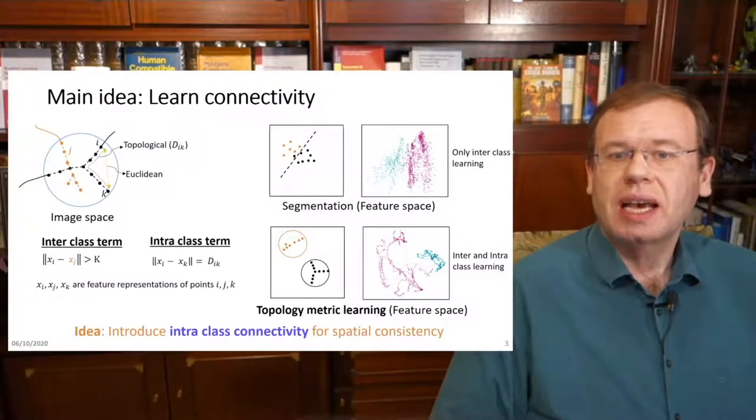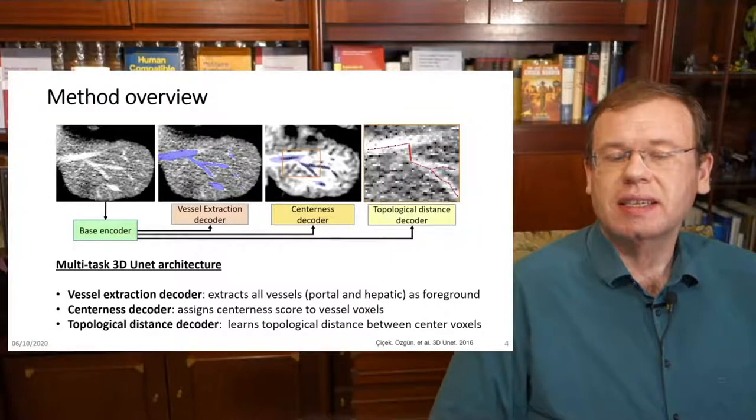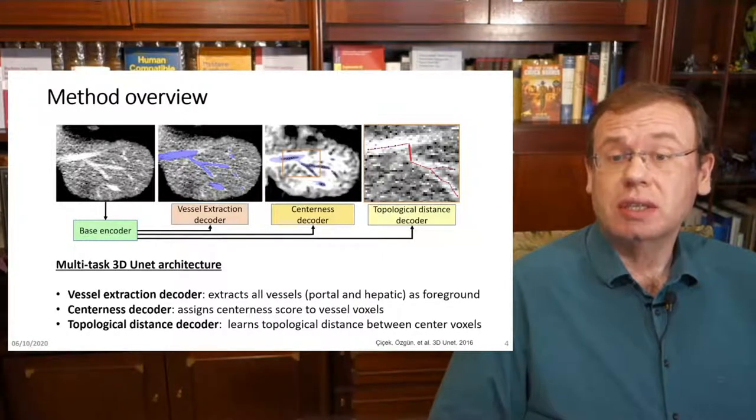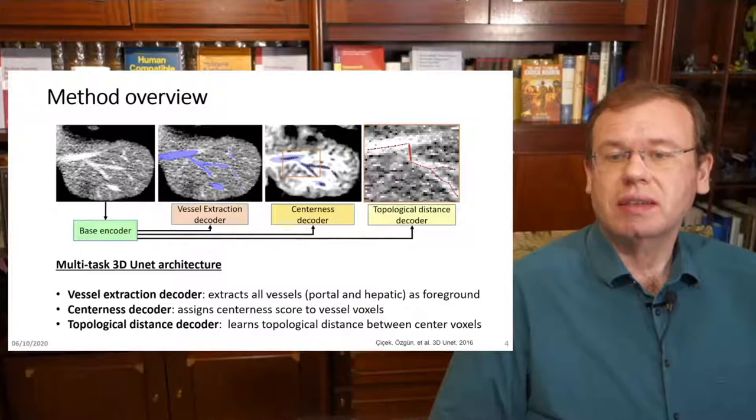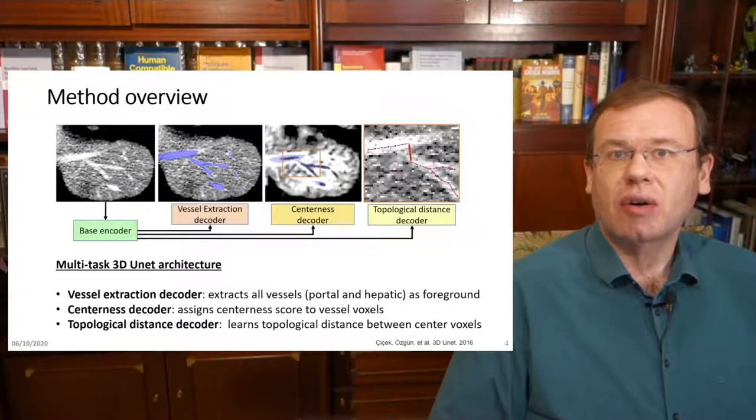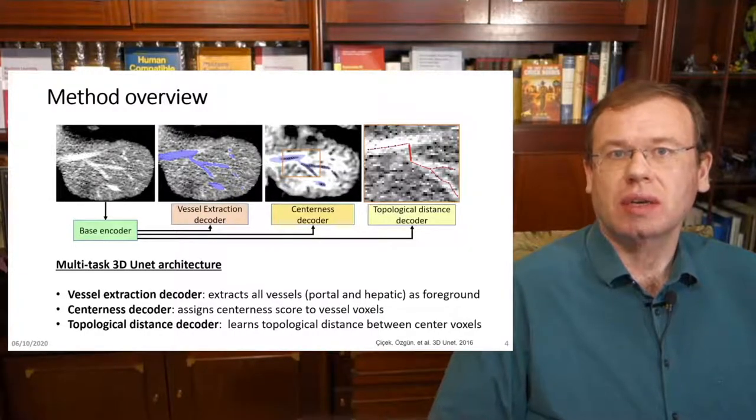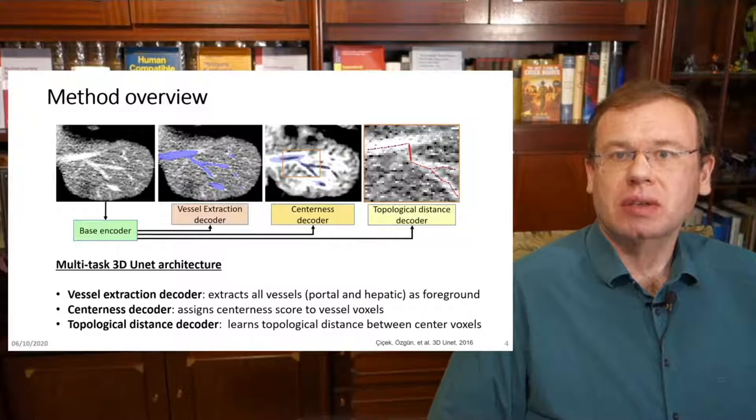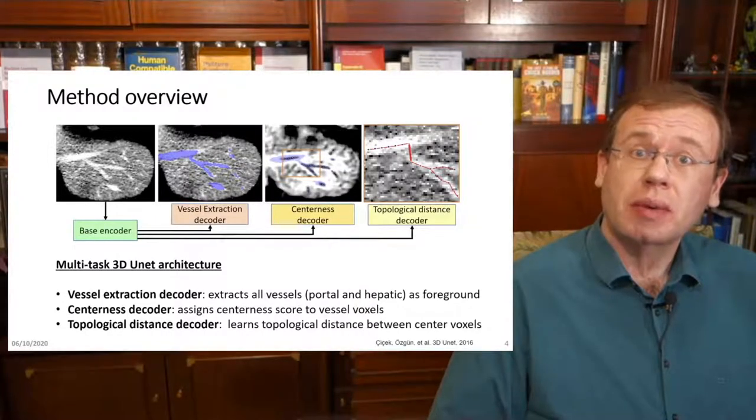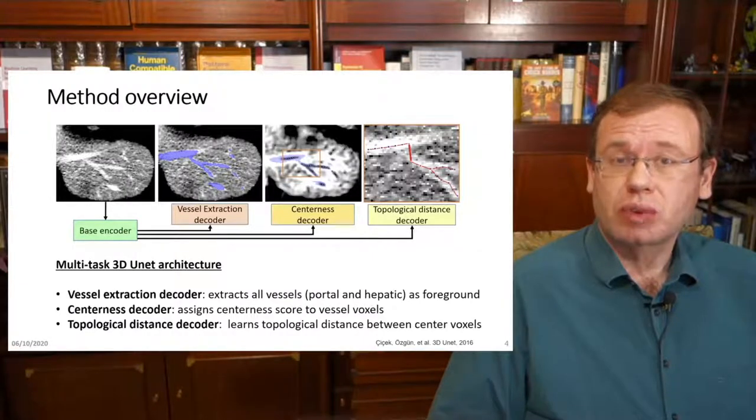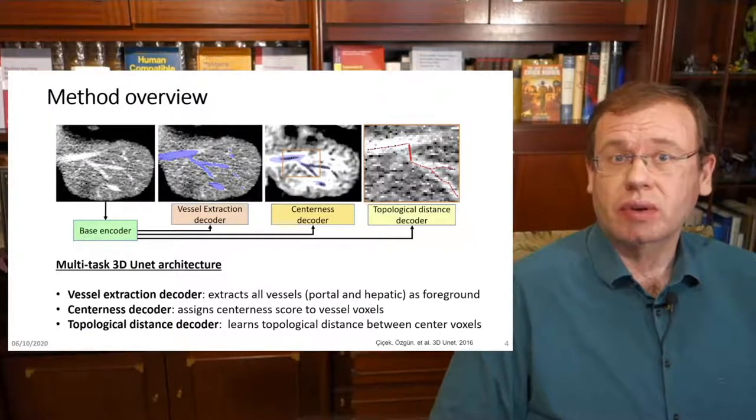So the key problem that you have to address here is how do you bring that into a deep learning framework? And they present this very nice idea that they have essentially a base encoder. And from this base encoder, they do a vessel extraction decoder. They have a centeredness decoder that delivers essentially the centeredness of every voxel. And then they have a topological distance decoder, which predicts a topological distance that is trained from the vessel tree structure models. So this is pre-computed and you can do that with the ground truth data.